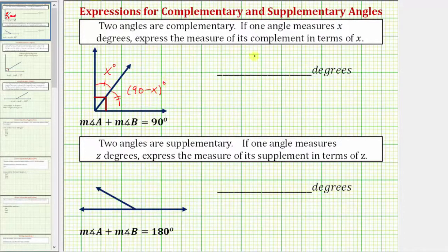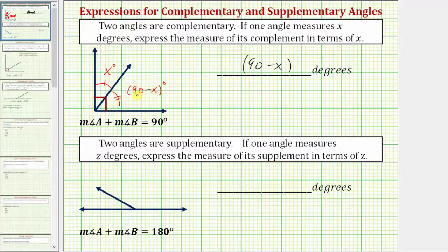So we enter 90 minus x. And just to check this: if x equals 40, this angle measures 40 degrees, and this angle measures 90 minus 40, or 50 degrees.